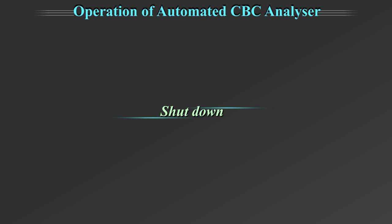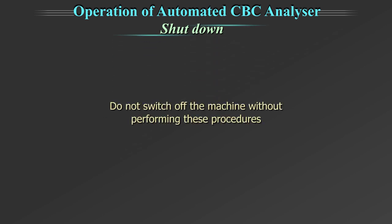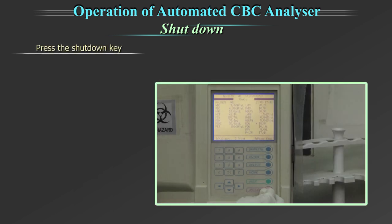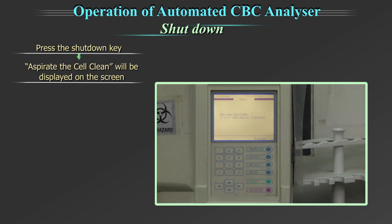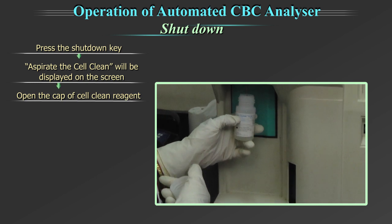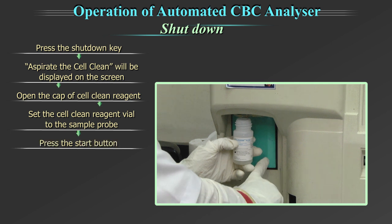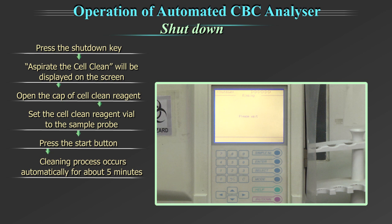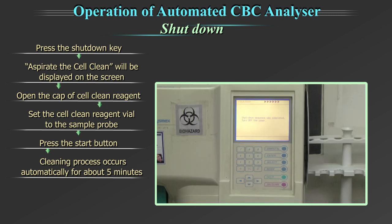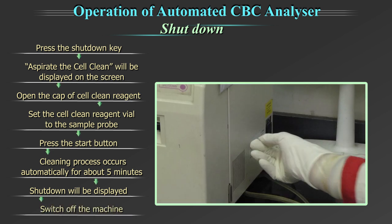For the shutdown process at the end of the day: do not switch off the machine without performing these procedures. Press the shutdown key. 'Aspirate the cell clean' will be displayed on the screen. Open the cap of the cell clean reagent, set the cell clean reagent vial to the sample probe, and press the start button. The cleaning process occurs automatically for about 5 minutes. After completing the process, 'shutdown' will be displayed on the screen. Now switch off the machine.